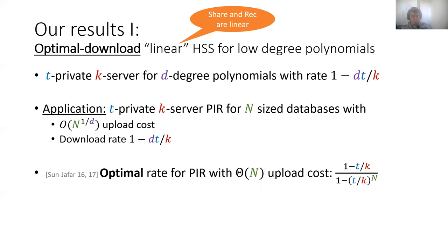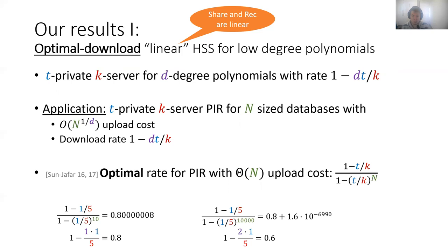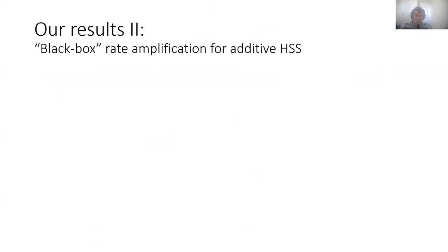Compare this to the optimal known rate for PIR where the upload cost is linear in the database size: the optimal known rate is (1 minus T over K) divided by (1 minus T over K) to the power of N. Even for a database of size 10, this difference in rate is not significant. If instead we want to improve the upload cost, the rate drops from 0.8 to 0.6, but we get savings in the upload cost by two orders of magnitude.